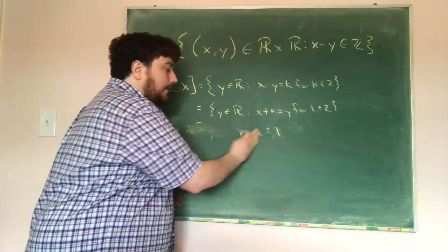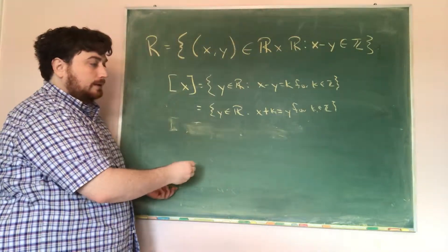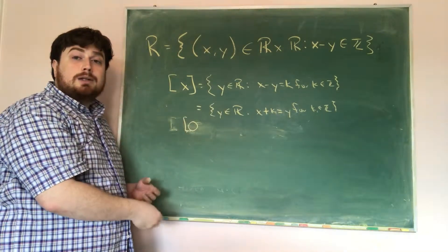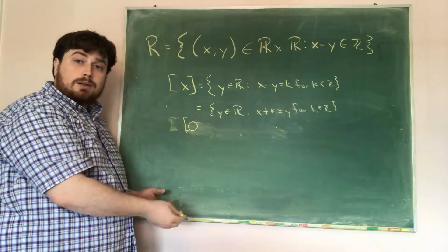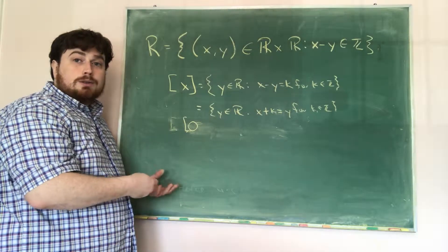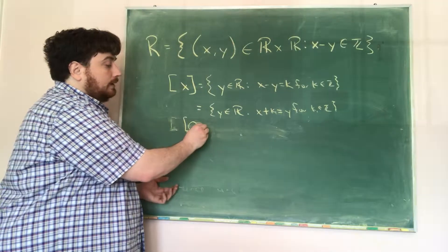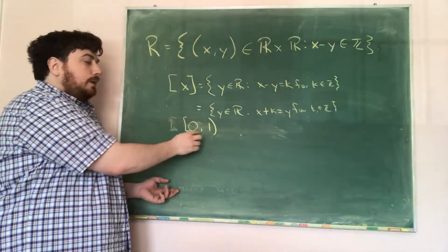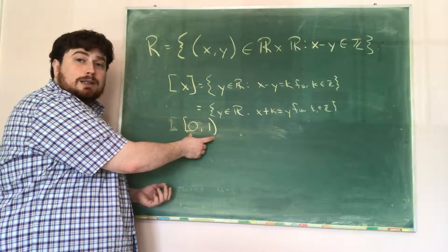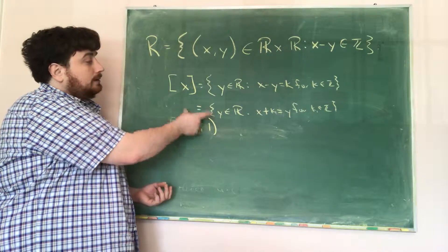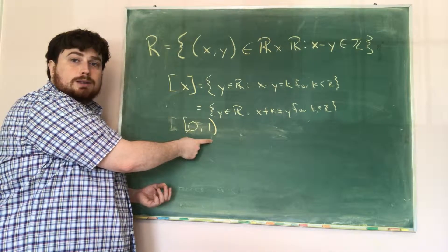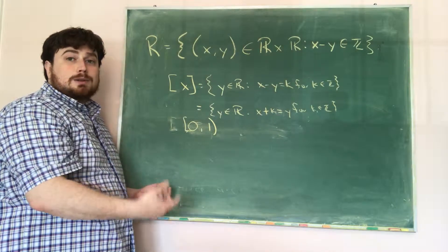We can find a unique representation of all the classes. For example, the equivalence class of 0 is all the integers; the class of 0.1 is all numbers of the form integer plus 0.1. Going from 0 to 1, each decimal value gives a distinct equivalence class. Everything between 0 and 1 is distinct from everything else with regard to r — none of these are r-related to each other, and all the equivalence classes are disjoint because their decimal parts differ.